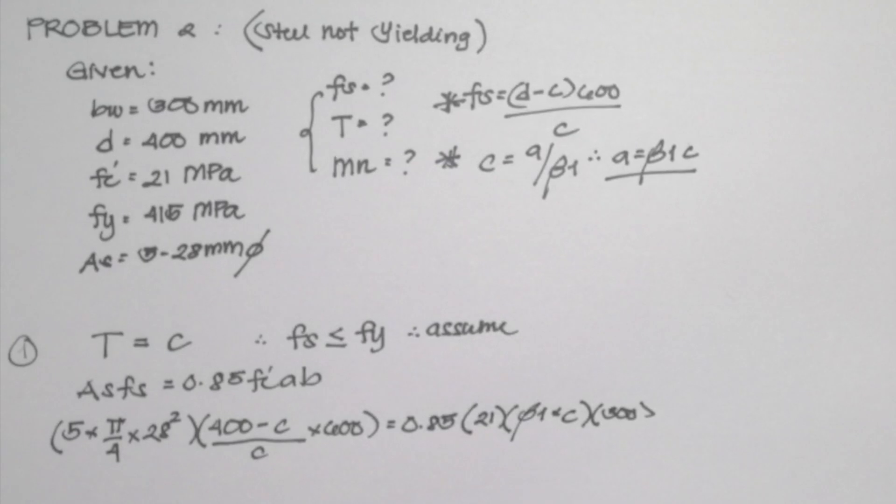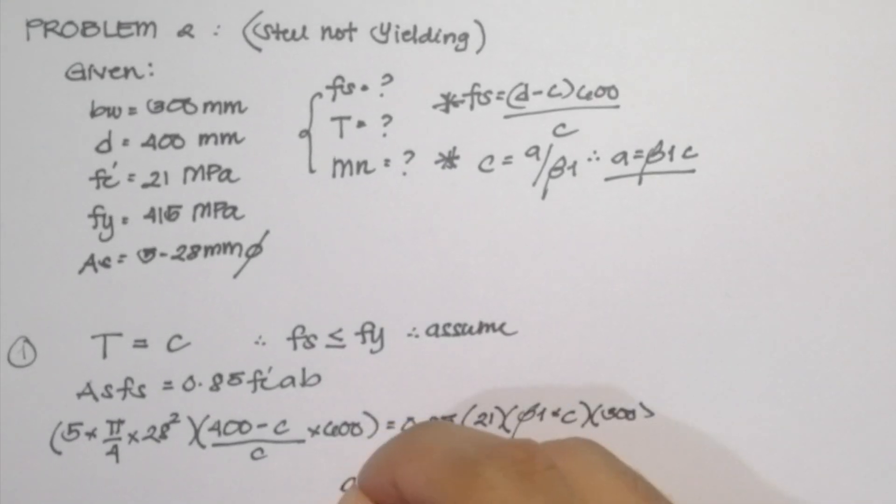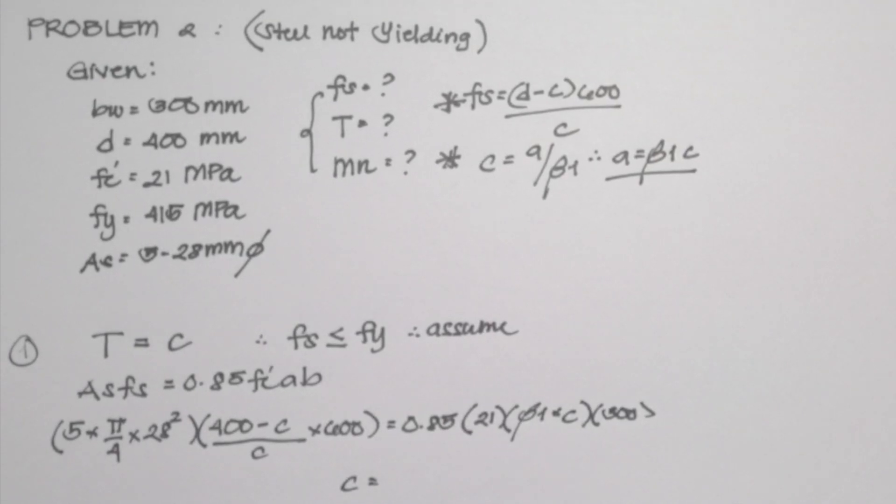C will now be our first variable to be solved. Okay, now solved by one equation and one unknown. Since we have C as our single unknown, we have one unknown, one equation, and we can now solve for its value.